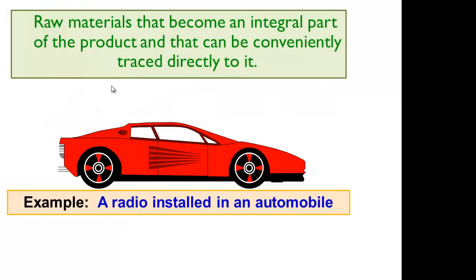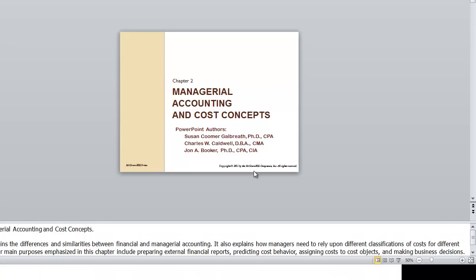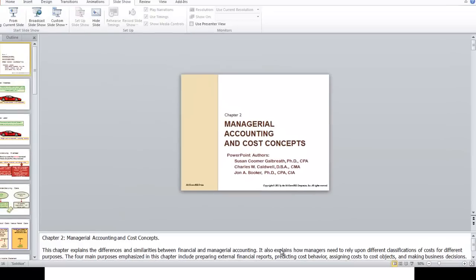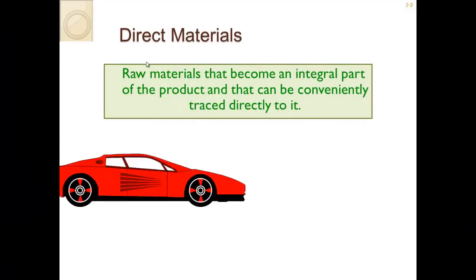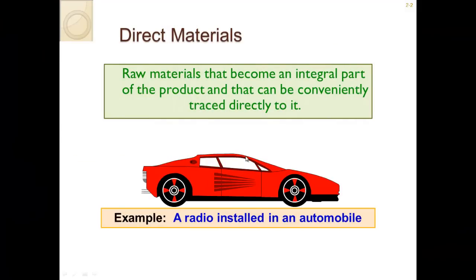Direct materials are raw materials that become an integral part of a product and can be conveniently traced directly to the product. For example, using a vehicle, a car — the radio installed on the automobile, the tires, the steering wheel — all of that would be direct materials. These are the raw materials that go into making the product.